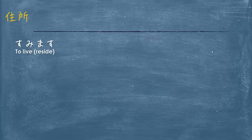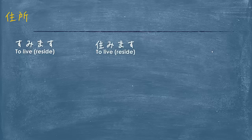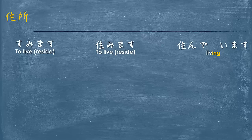Now we go to the less formal way of describing where you live. The written form is always a little bit more formal than the spoken version. First we need to know the verb for living — to live is sumimasu, written in kanji it looks like this. But when you think about it, when you're describing where you live, it's an action that's happening right now — you're living in this place. So the grammar pattern has to change, and it's sunde imasu.